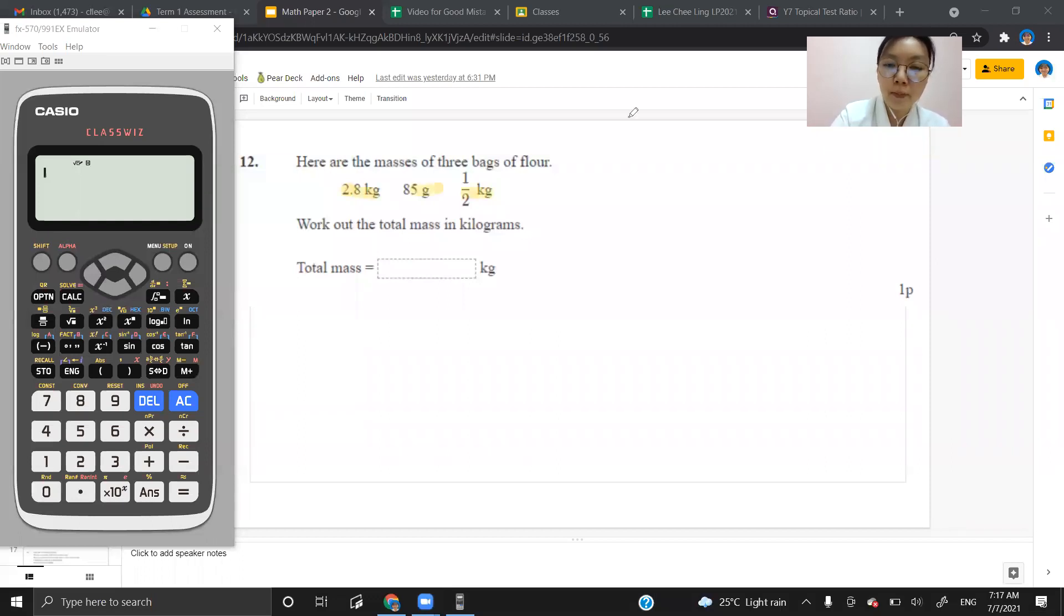So I want to find the total mass in kg. I have my kg in the answer column and my total here implies me to use a plus. So I'm going to add all of them up.